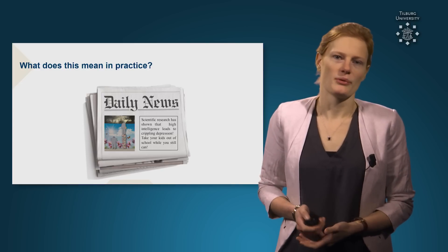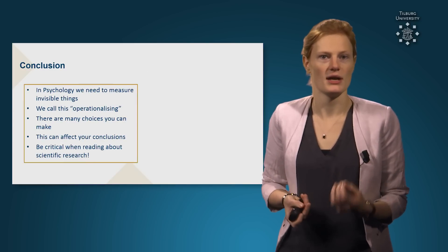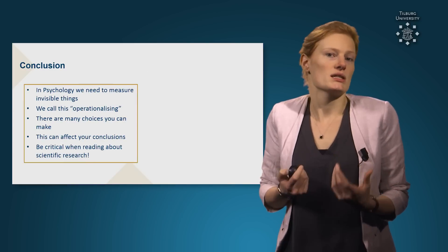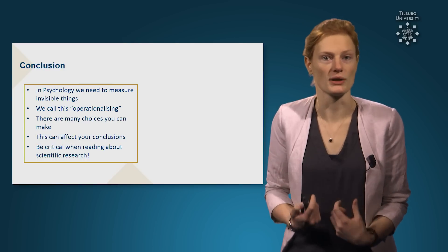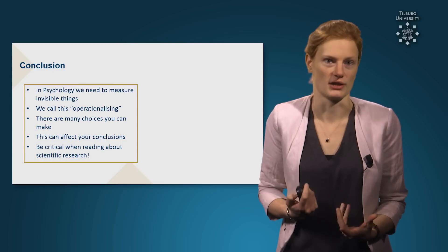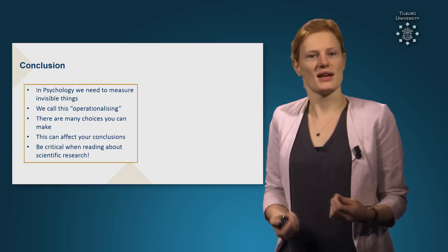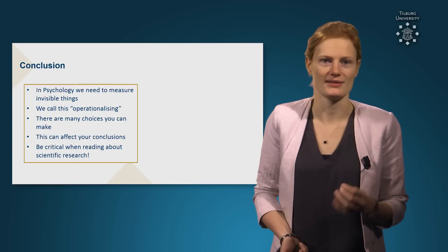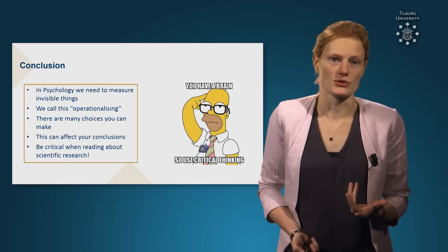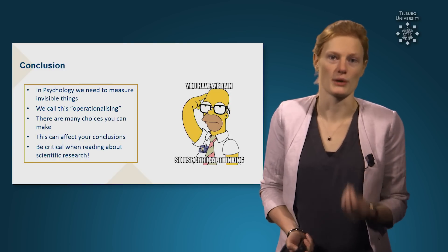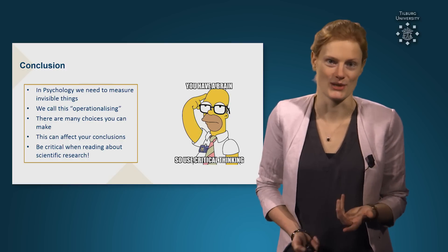To sum up this video lecture: the first thing you need to realize is that in psychology we need to measure invisible things. This is difficult, so we need to make them concrete — and we call this operationalizing. In operationalizing there are many choices you can make, and these can affect your conclusions. That means when you're reading scientific research, you need to be critical. Be critical when you read about science. Thank you very much for your attention, and I hope to see you in one of my lectures in the future.